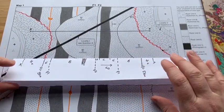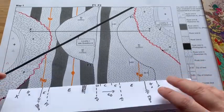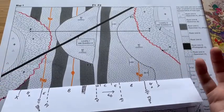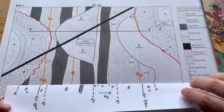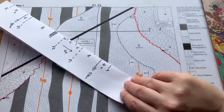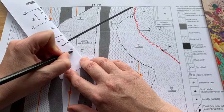Okay, so first things first, we need to work out our age relationships. So where do I start? Which is the youngest feature? What do I put on first? Well, we know this dike cuts across all the faults and the unconformity and the folds. So we're going to start with that. So I'm going to do the dike first.